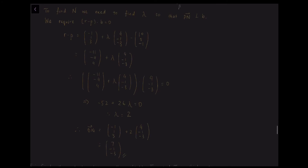We are not done yet — we also want to find the modulus of PN. So PN = r − p = (−11, −4, 4) + 2(4, −1, −3) = (−3, −6, −2). Therefore |PN| = √((-3)² + (−6)² + (−2)²) = √(9 + 36 + 4) = 7.